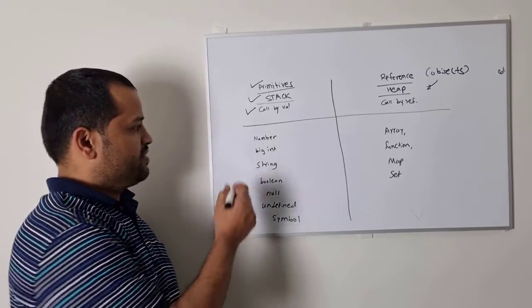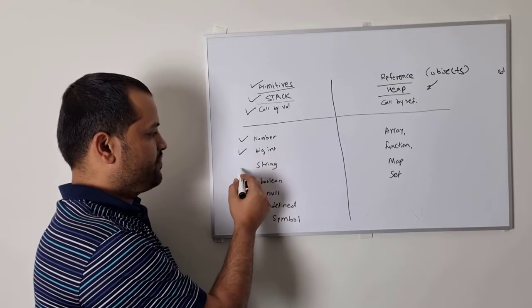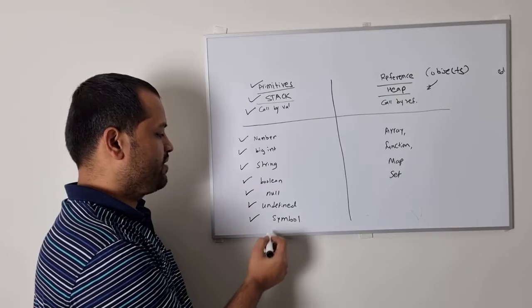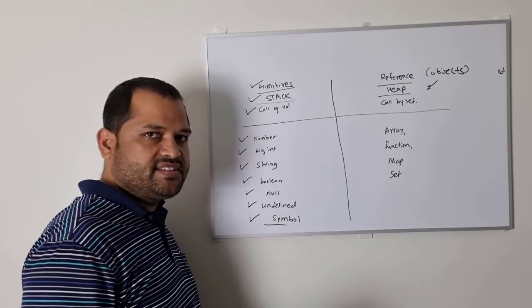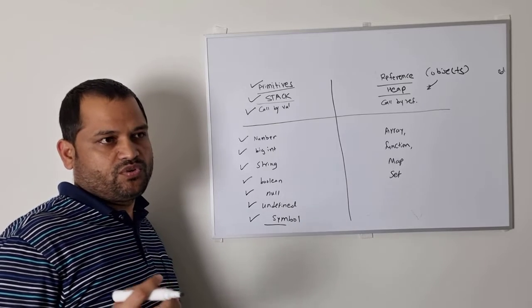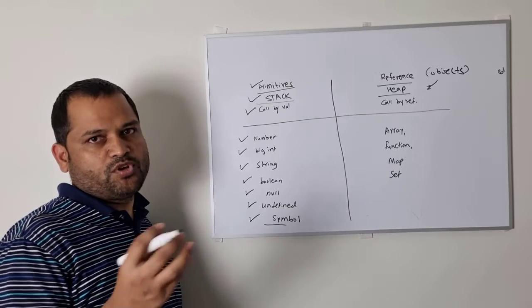Let's see what the primitives are. There is number, big int, string, boolean, null, undefined, and symbol. Symbol has been added recently and is used to get unique values, which you can use as properties of objects.